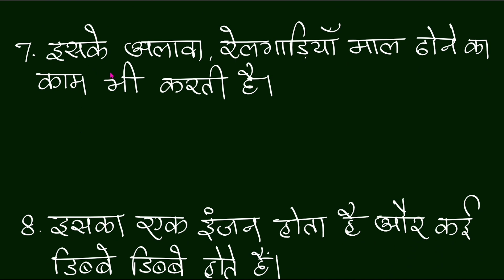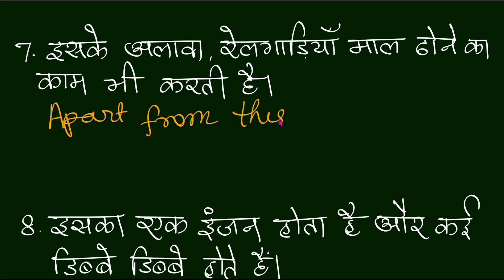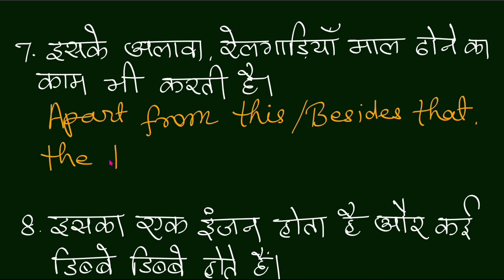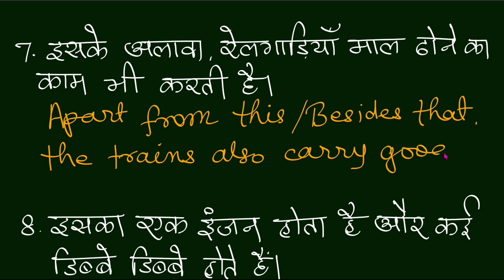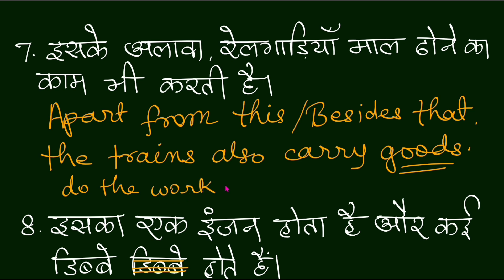Iske ilaawa, rail gaariyan maal dhone ka kaam bhi karti hain. 'Iske ilaawa' means 'apart from this,' and you can also use 'besides that.' So: 'Apart from this, the train also does the work of carrying goods.' You can write it as: 'Apart from this, the train also carries goods.'